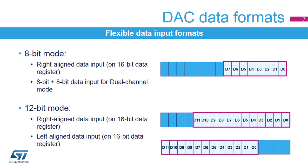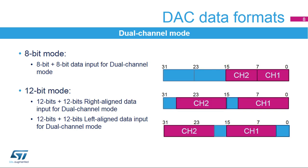The DAC can support different input formats. In 8-bit mode, it uses a right-aligned 8-bit data format. In dual-channel mode, it uses an 8-bit plus 8-bit data format to provide input data for two DACs. In 12-bit plus 12-bit mode, either a right- or left-aligned mode can be used. Data held in these registers are transferred to the related converters either synchronously, for instance for stereo audio, or asynchronously, meaning the two channels can operate independently.